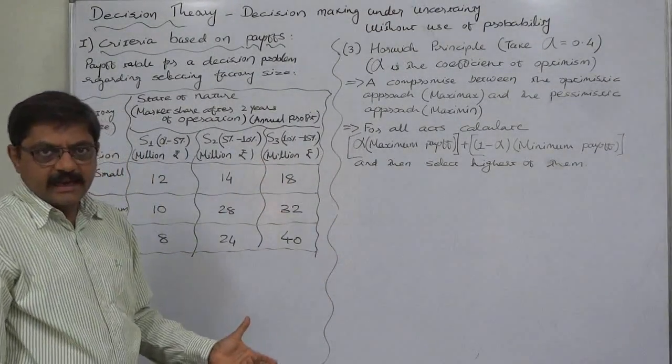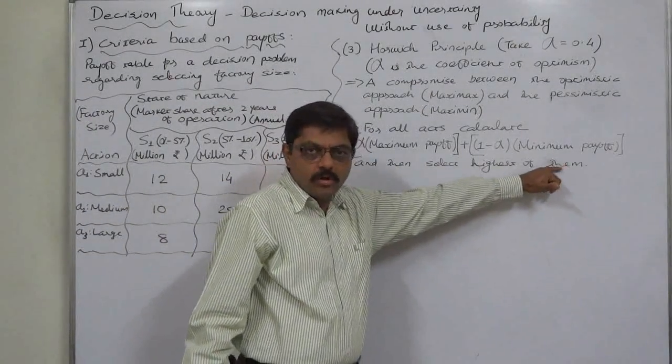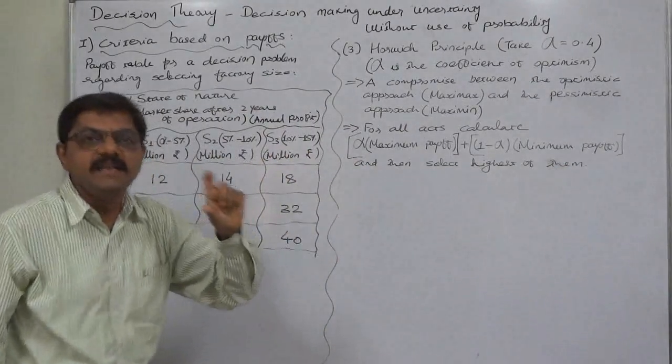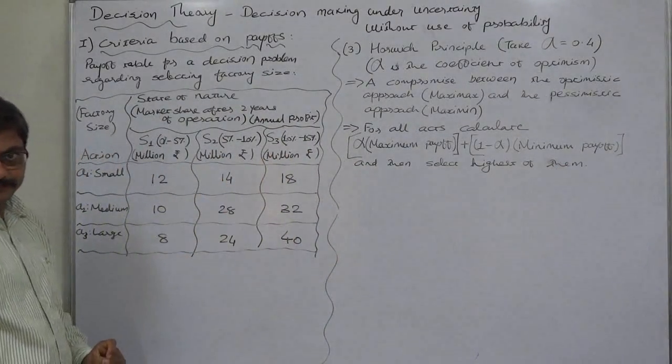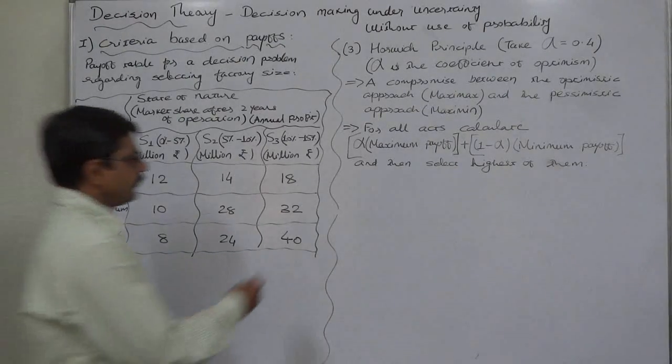In the second step, we compare such final amounts of all the actions. In the last step, we select the action or alternative with the highest such amount.